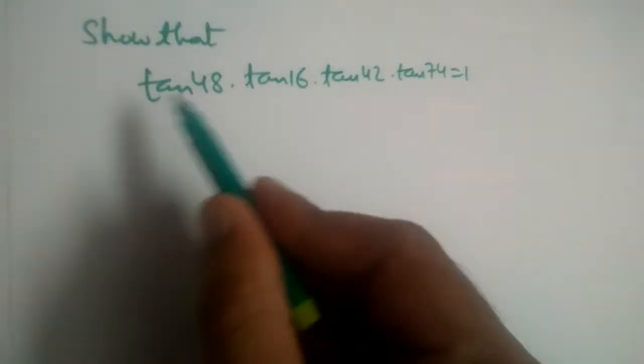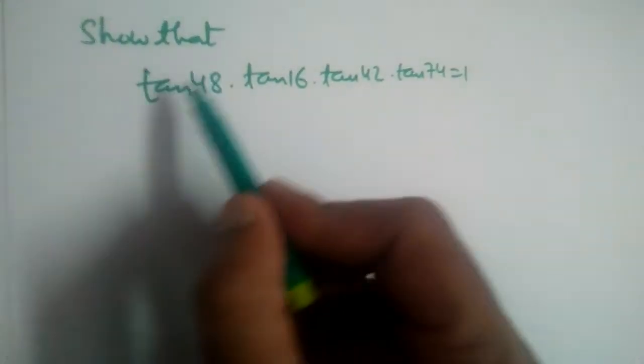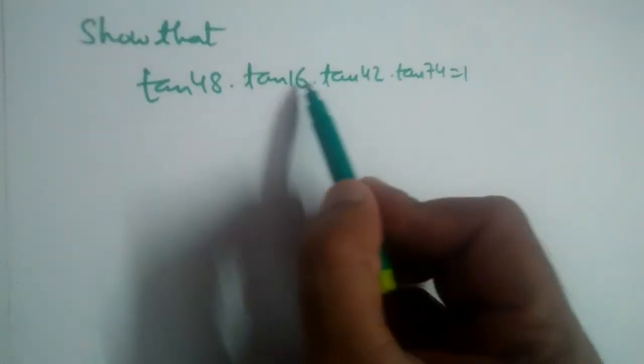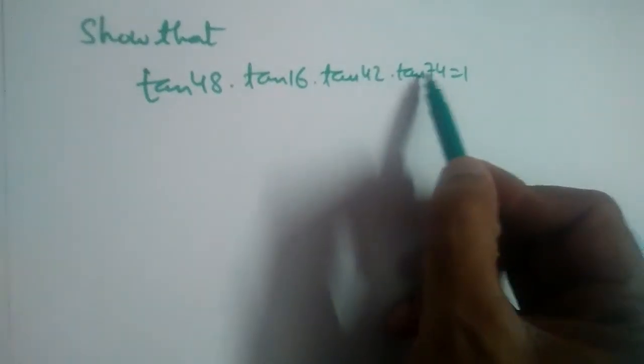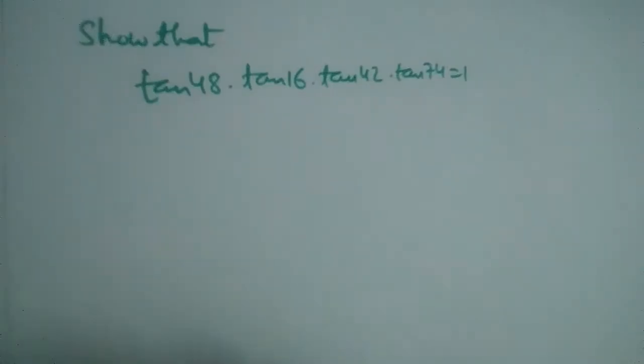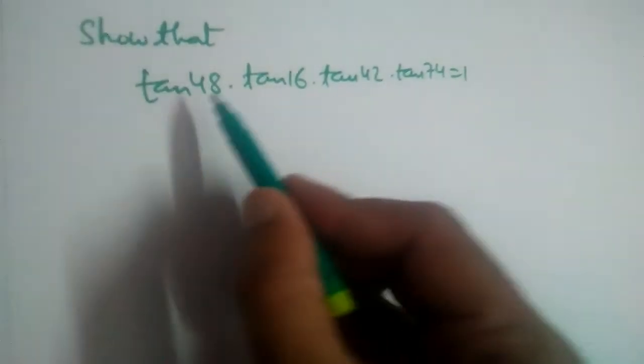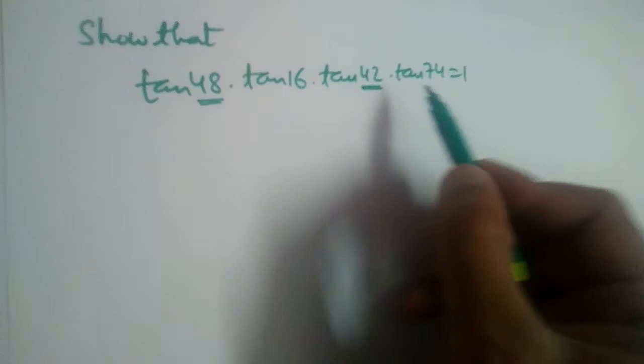In this video we'll solve this problem: show that tan 48° times tan 16° times tan 42° times tan 74° is equal to 1. Now which two are complementary pairs here? See, 48 and 42. 48 plus 42 is 90 degrees, right?